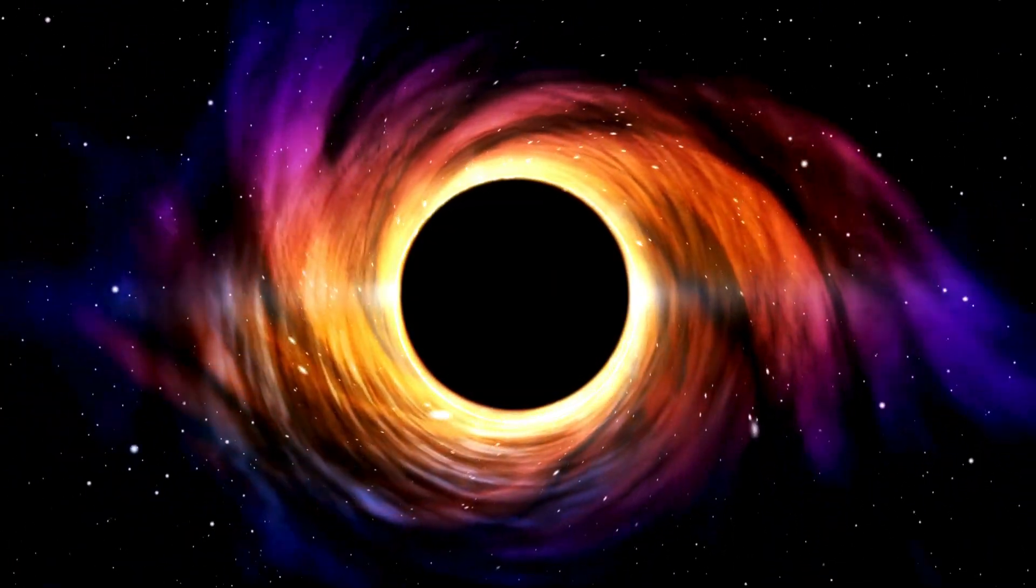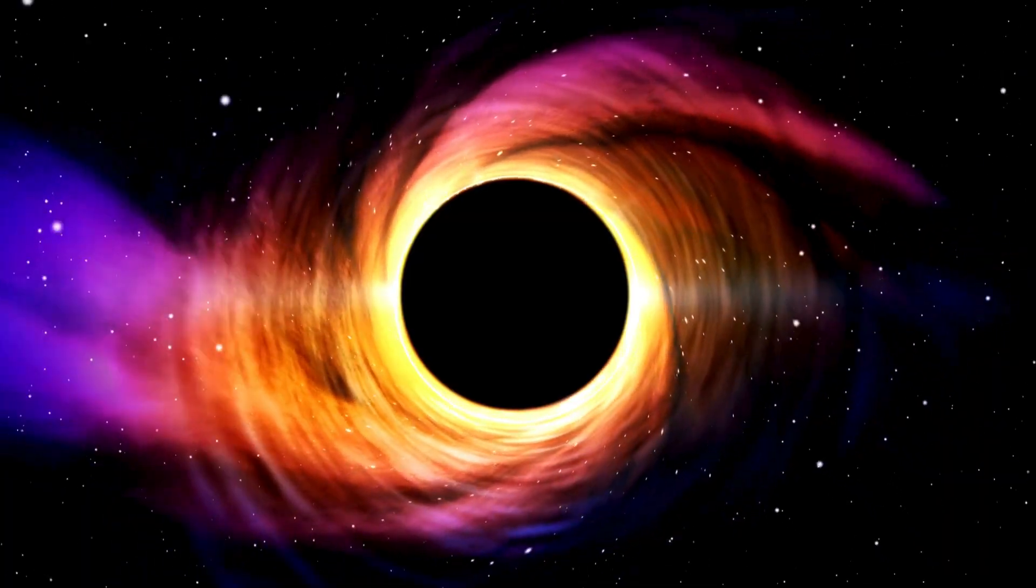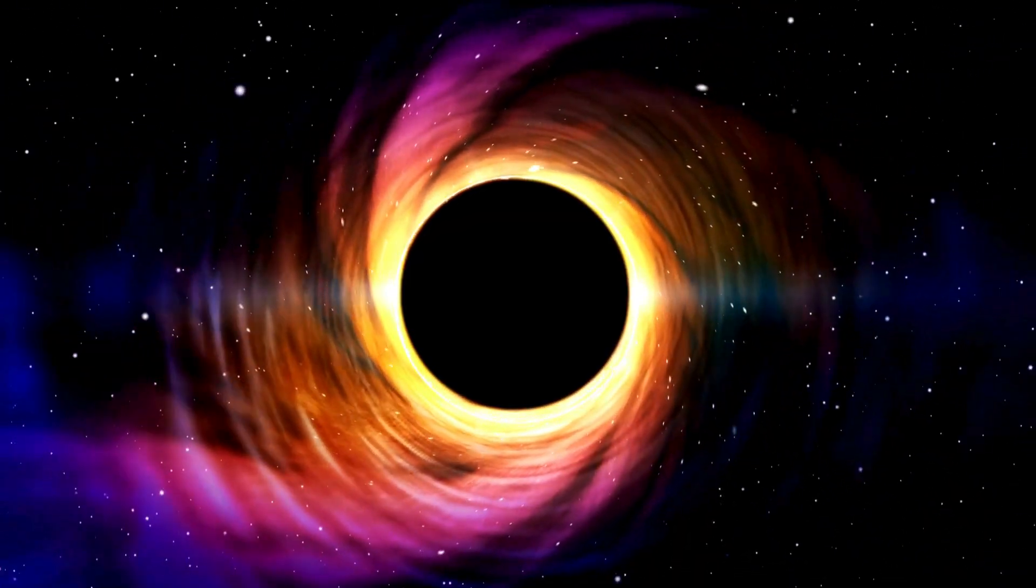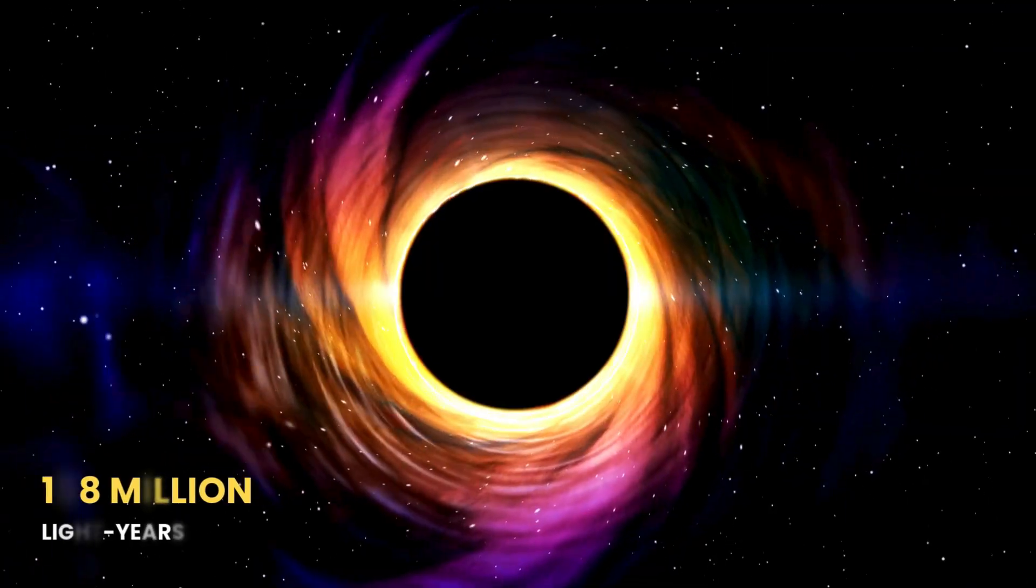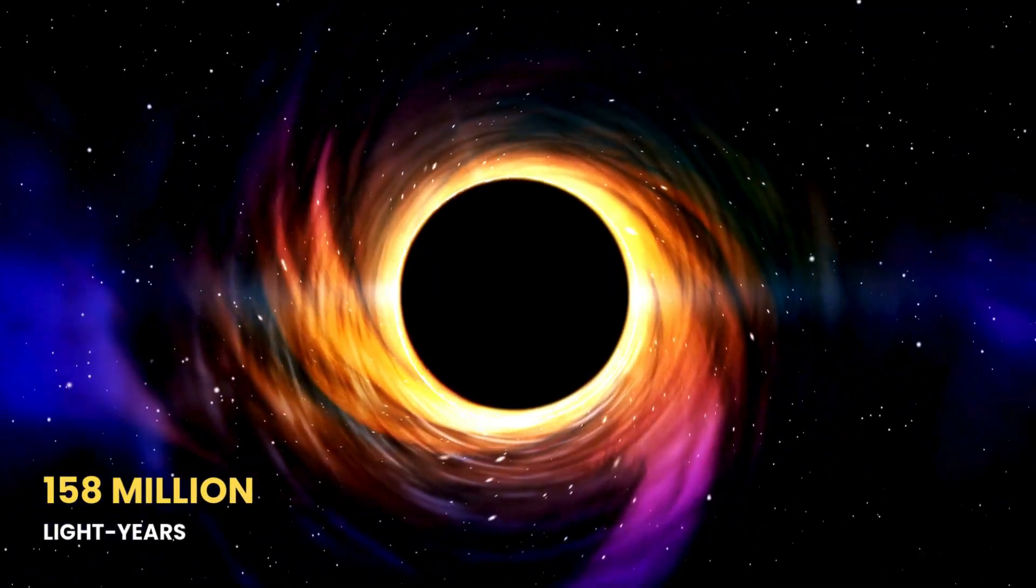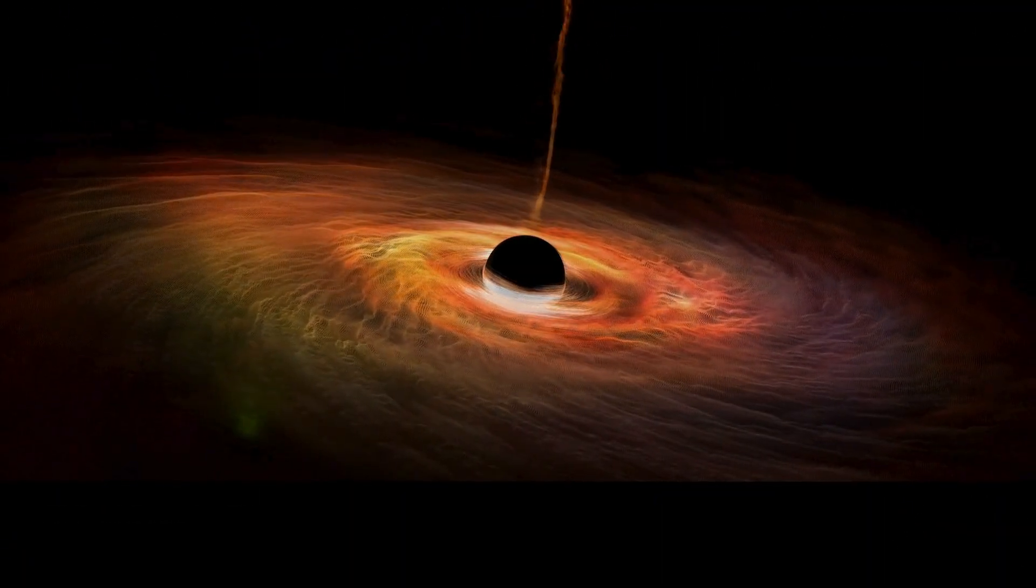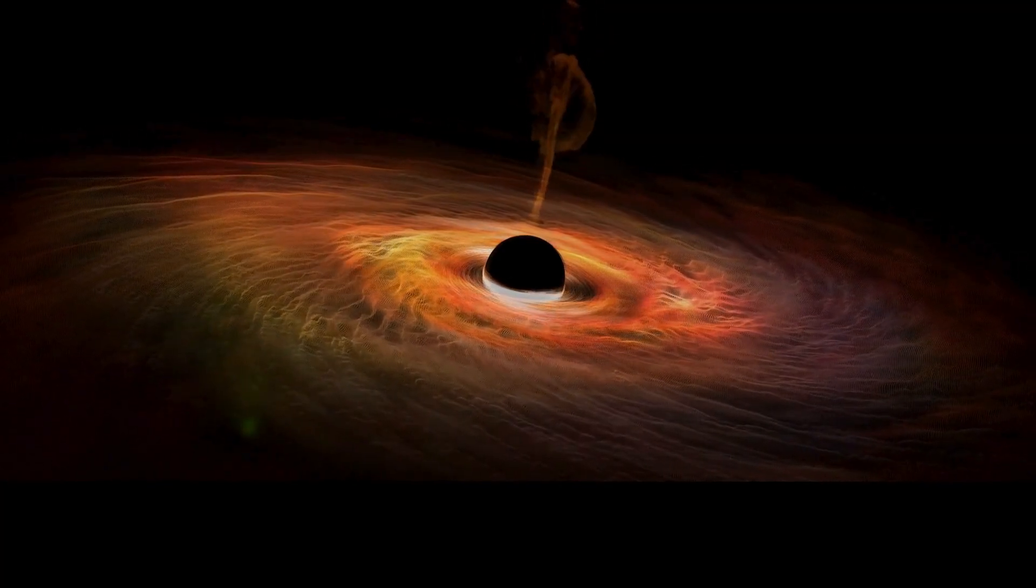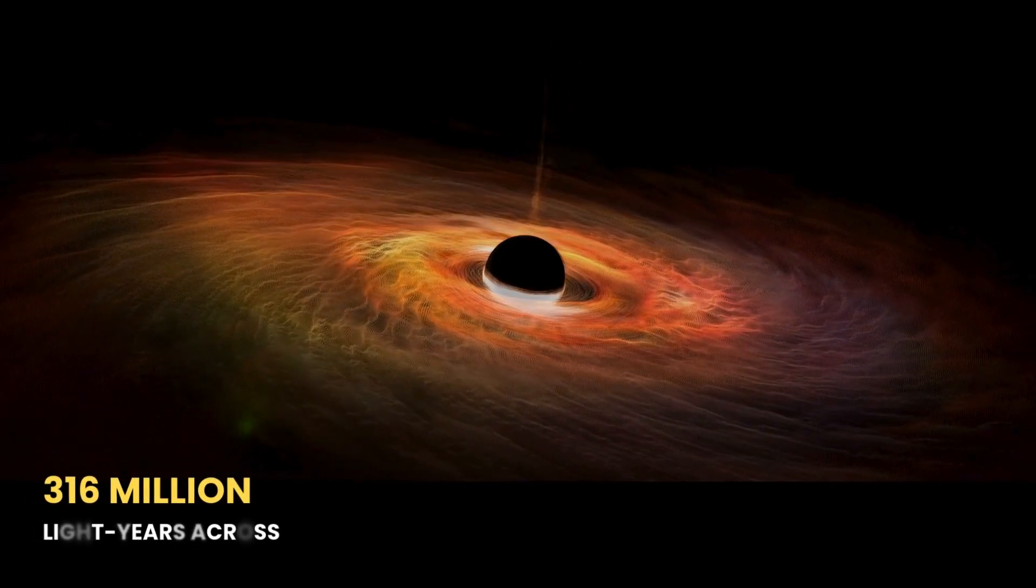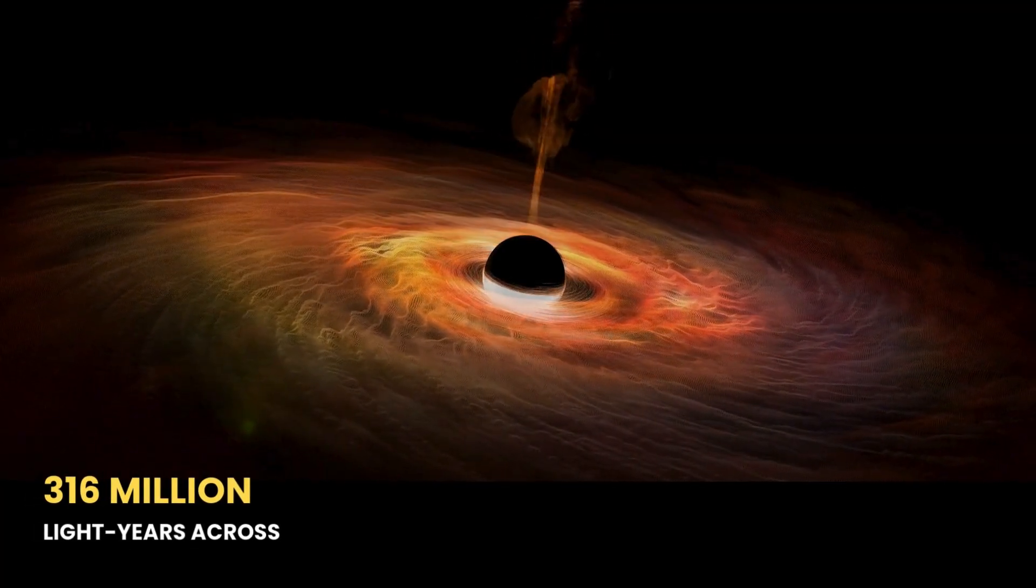Now, cram all of that into one place. The result would be a single black hole with a radius of about 158 million light years. That means its diameter, its event horizon, would stretch 316 million light years across.